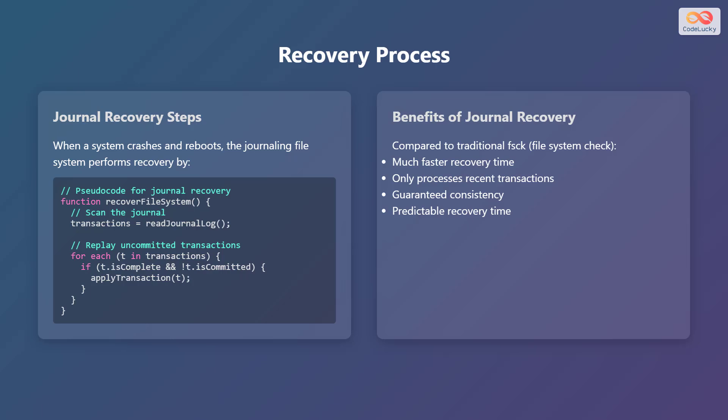Compared to traditional file system check or FSCK, journal recovery offers several benefits. It provides a much faster recovery time as it only processes recent transactions. It guarantees consistency by replaying all uncommitted changes, and it offers a predictable recovery time, making it easier to manage system downtime.